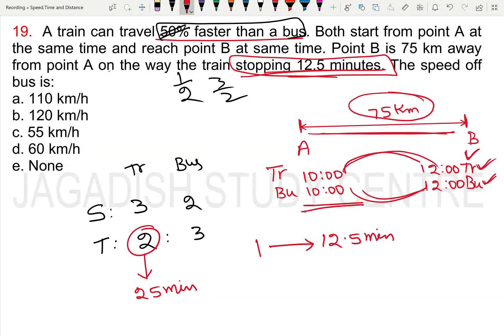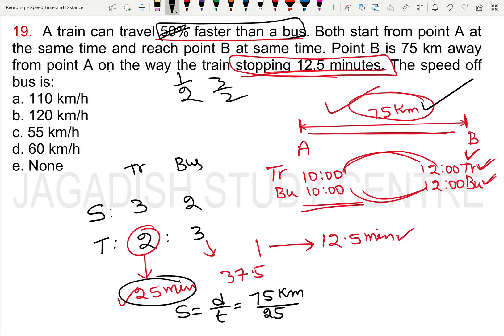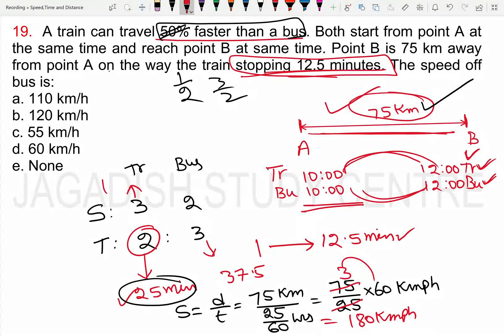The train's time is calculated as distance by time. Speed equals distance by time, which is nothing but 75 divided by 25 times 60 km per hour. So the speed of the train is 3 parts, which is 180 km per hour. The bus is 120 km per hour.